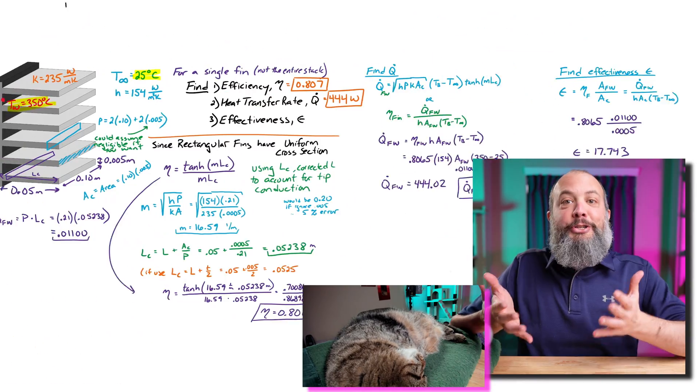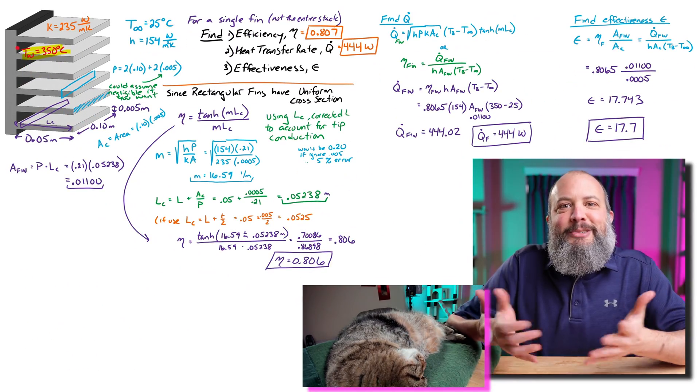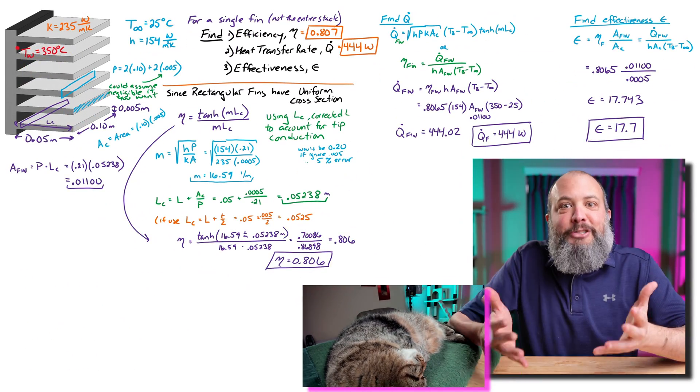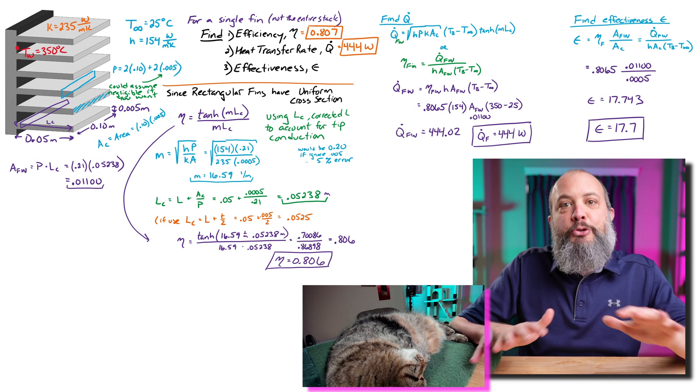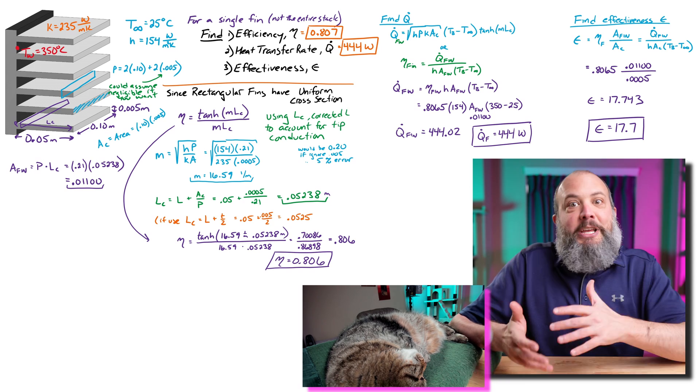And that should help demonstrate to you why we use fins. 17 times more heat transfer. So adding the extra surface area makes a huge difference in your ability to get rid of heat. And if you think you're getting it, but you want one more example problem to be sure, click on the video on the screen here for a cylindrical pin fin where we go into more detail about the difference between infinite length fins versus adiabatic tip versus actually accounting for convection at the tip of a fin.